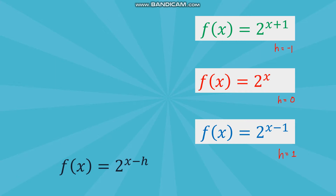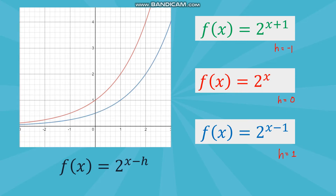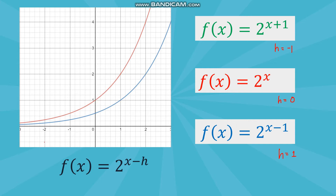Let's see what happens to the graph as h changes. Starting with f(x) = 2 raised to x, if we set h equal to 1, the graph moves one unit to the right. You can observe that points from f(x) = 2 raised to x and f(x) = 2 raised to (x minus 1) are exactly one unit apart from one another.